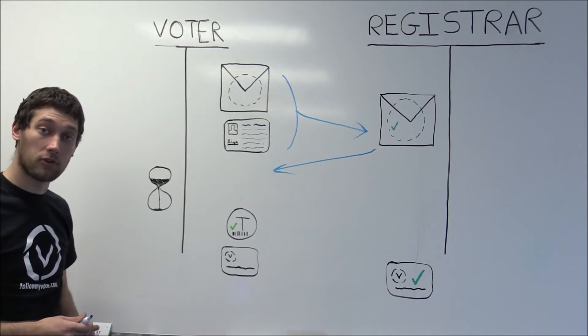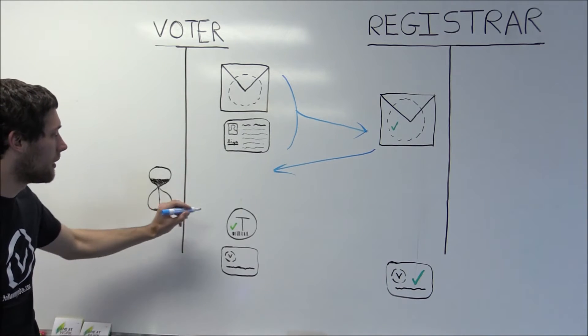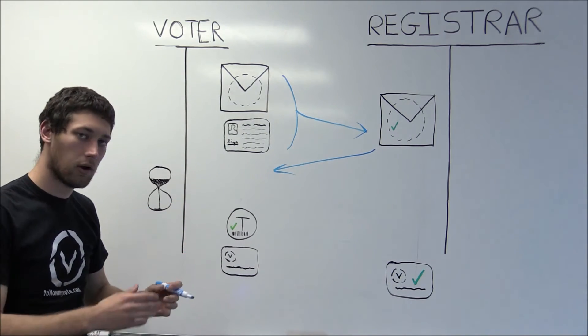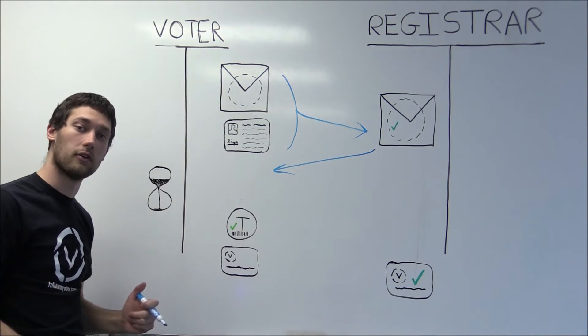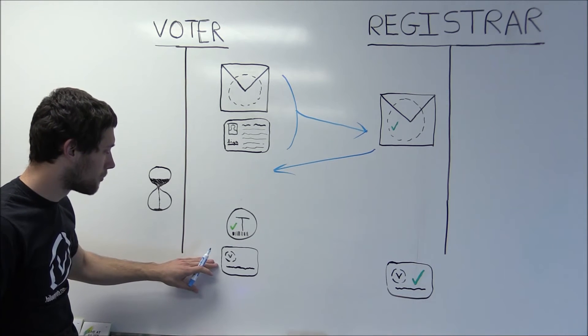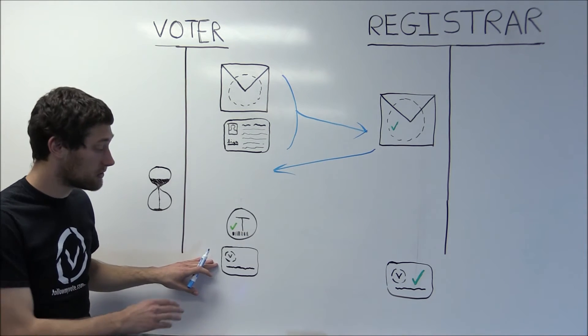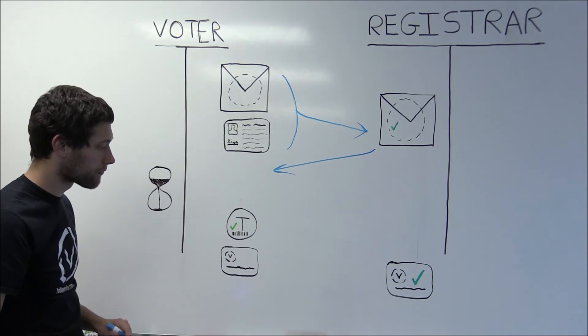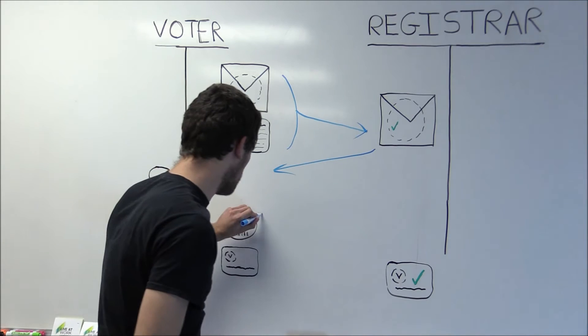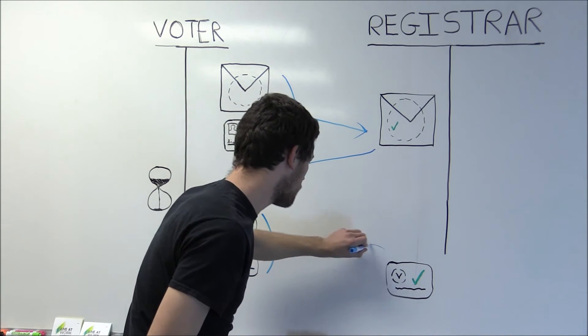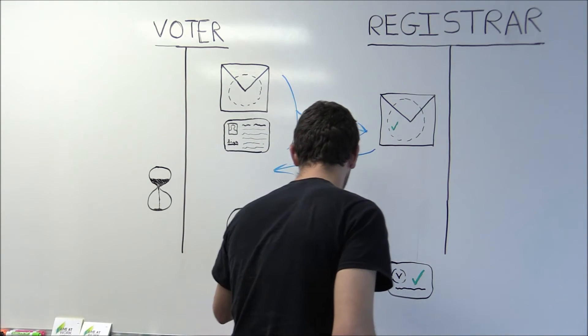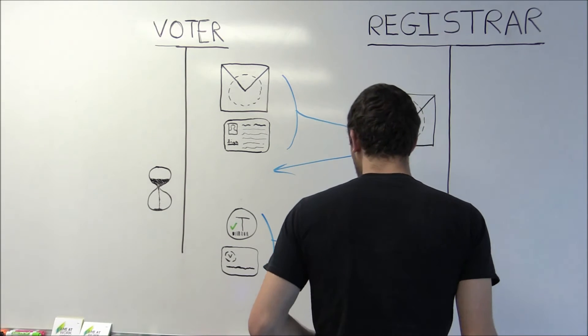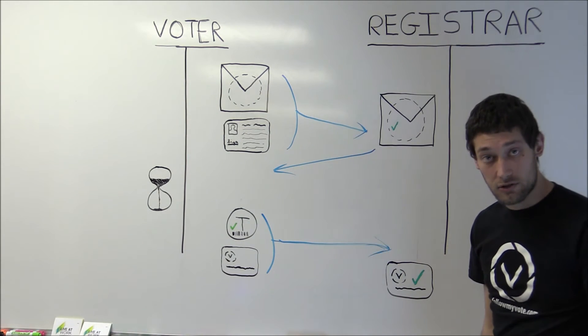Once a number of voters have done this, he then unblinds the token, which is like pulling it out of the envelope, and creates a brand new voter identity, which is in no way tied to his real identity. He then sends both of these to the registrar to finish the registration step.